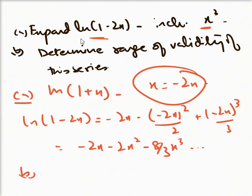In part b, we have to find the series. Now for ln(1+x), the range is -1 < x ≤ 1.